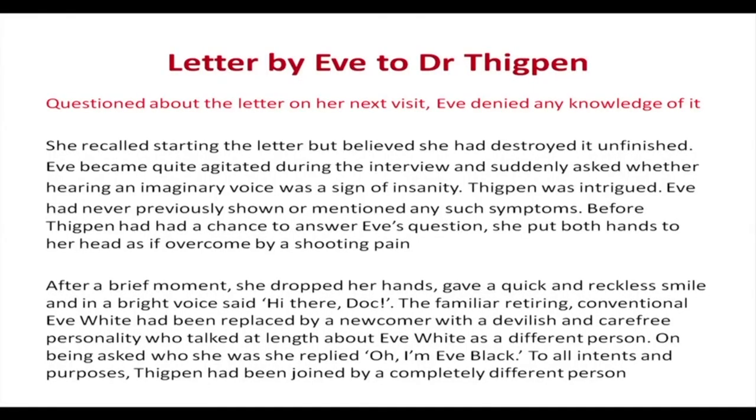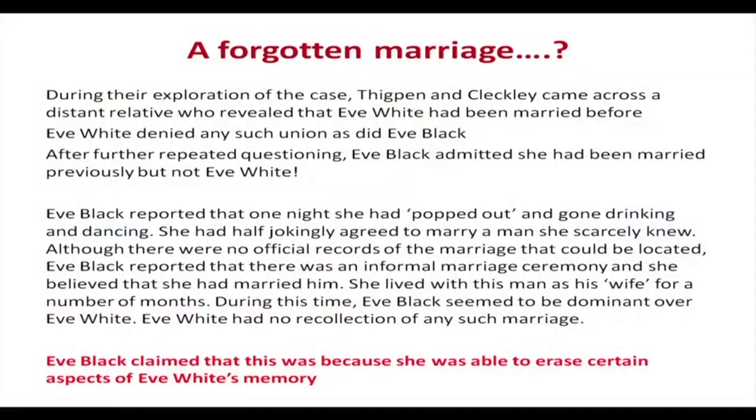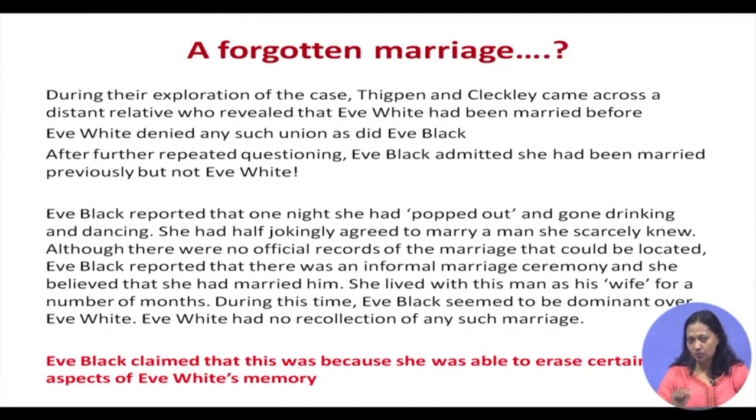To all intents and purposes, Thigpen had been joined by a completely different person. During their exploration of the case, Thigpen and Cleckley came across a distant relative who revealed that Eve White had been married before — something she had never mentioned. With further exploration after Eve Black had emerged, they got to know there was another marriage in the background which Eve White had completely denied.